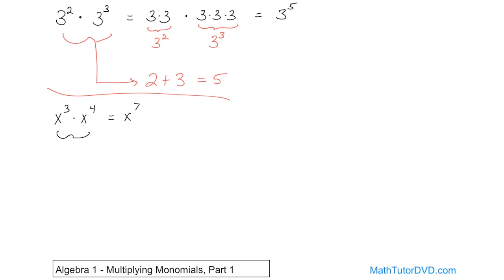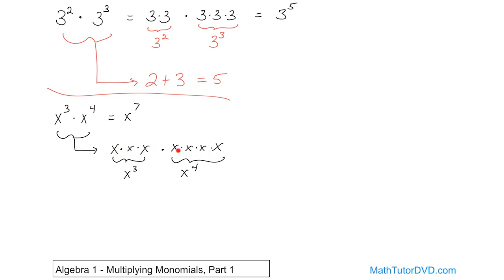Just to make sure it's clear in your head — what are you doing here? You have x times x times x, which is x cubed, and you're multiplying that quantity by x times x times x times x, which is x to the power of 4. So because they're all multiplied together, you now have 7 x's altogether, and that's why it becomes x to the power of 7.